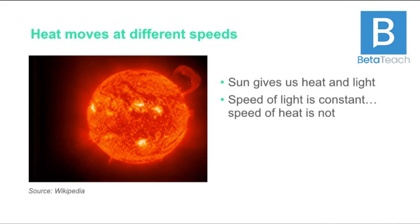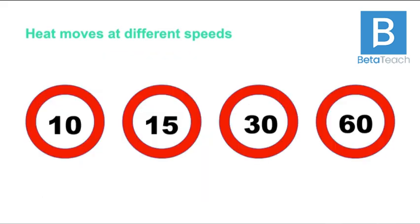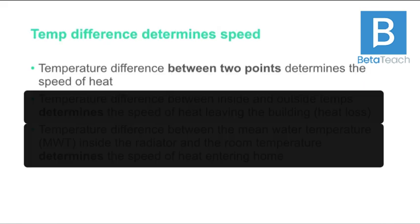One of the biggest things to understand about heat is that it moves at different speeds. The Sun is where we get our heat and light, and we all know there's something called the speed of light — that's a constant speed. Heat is different: it moves at different speeds. Whenever you think of heat, flash these images in your head to get the idea that it moves at different speeds.